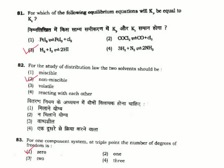Question 82: For the study of distribution law, two solvents should be — for distribution law, the two solvents must be immiscible, meaning they do not mix with each other, like phenol and water. Correct answer is Option 2.